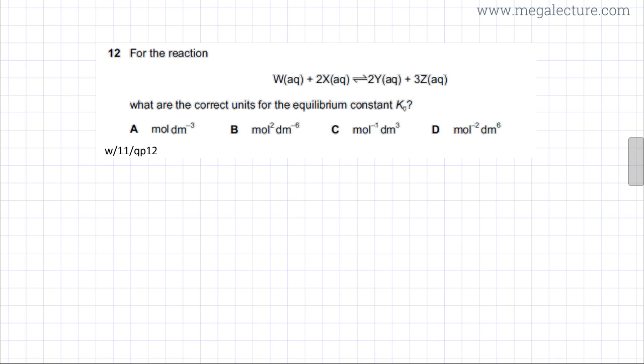To find the units, first write down the expression for Kc. Kc is the ratio of the concentration of products divided by reactants. Your products are Y and Z, so it would be the concentration of Y squared (since there are two Y's in the equation), and the concentration of Z cubed. Divide that by the reactants.